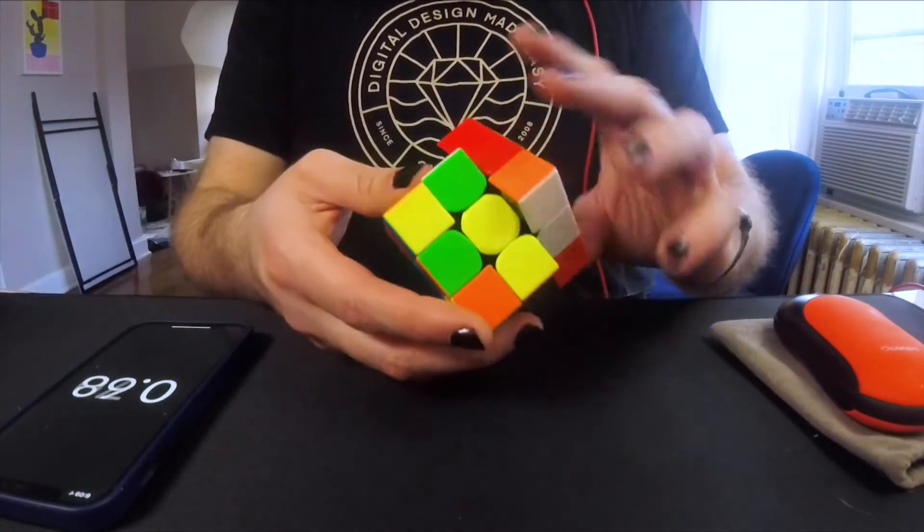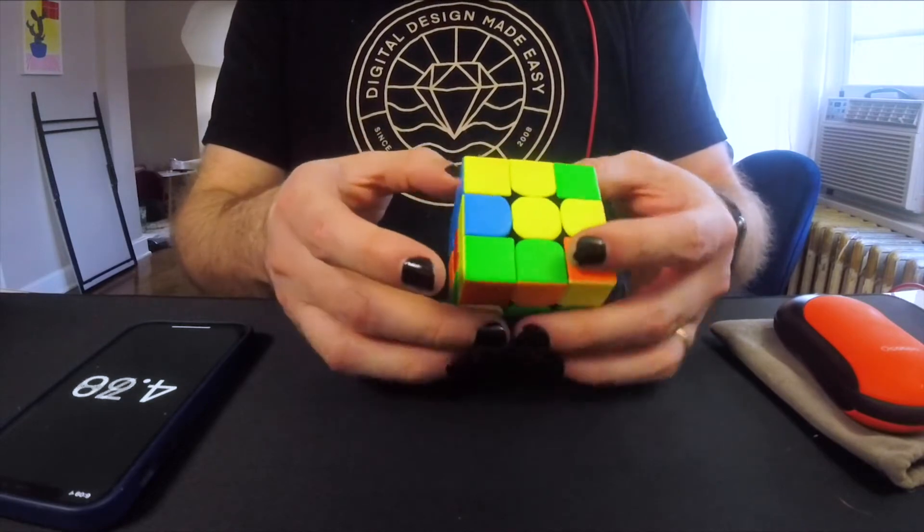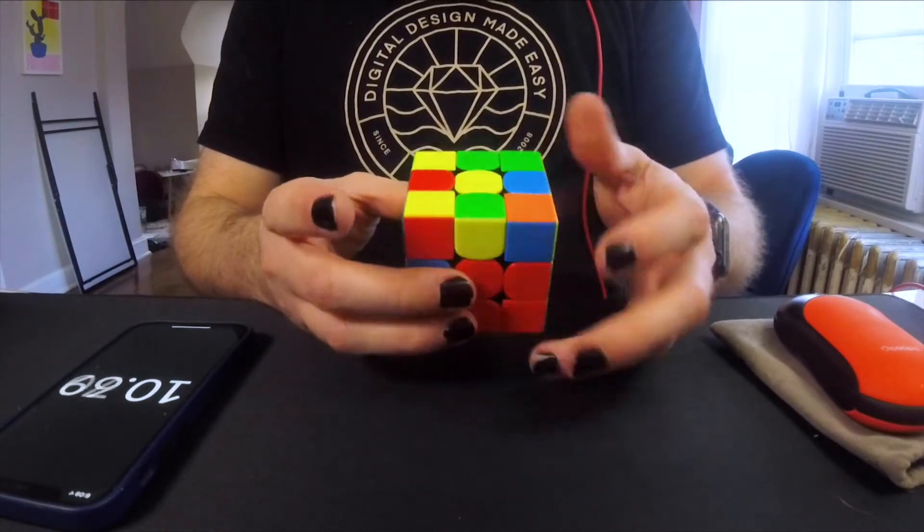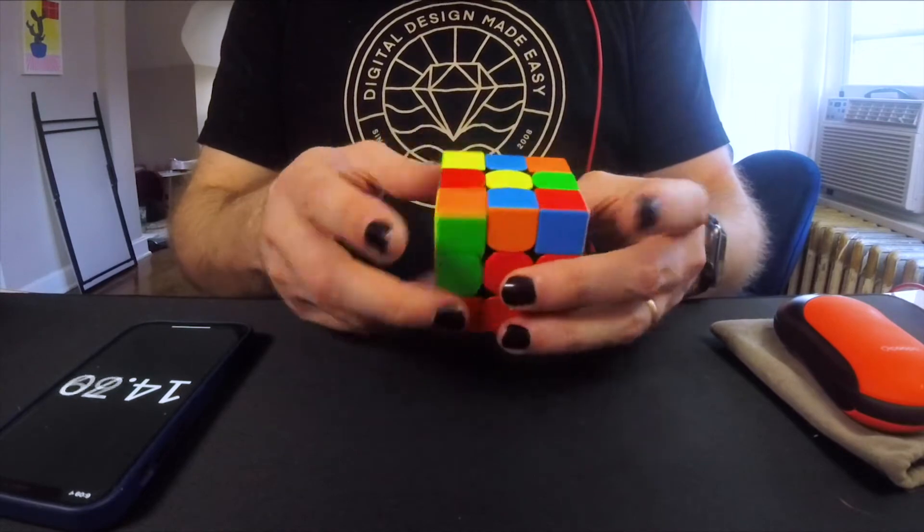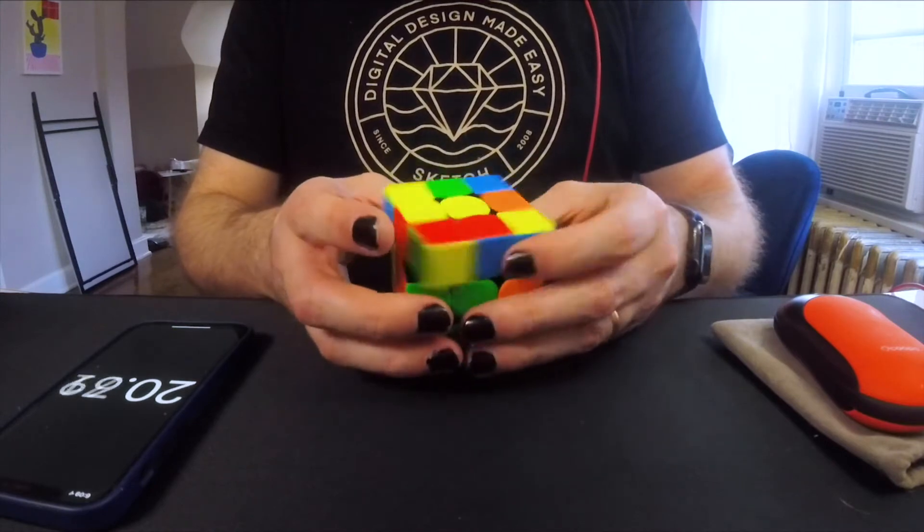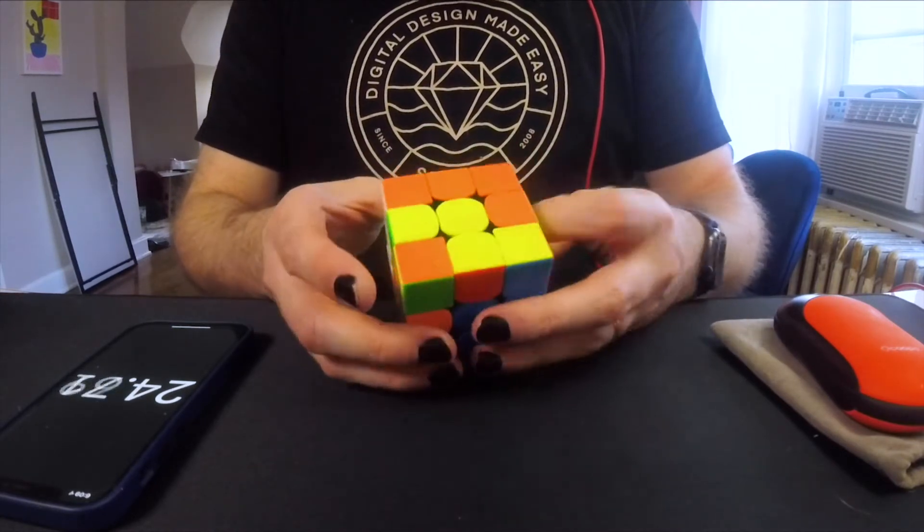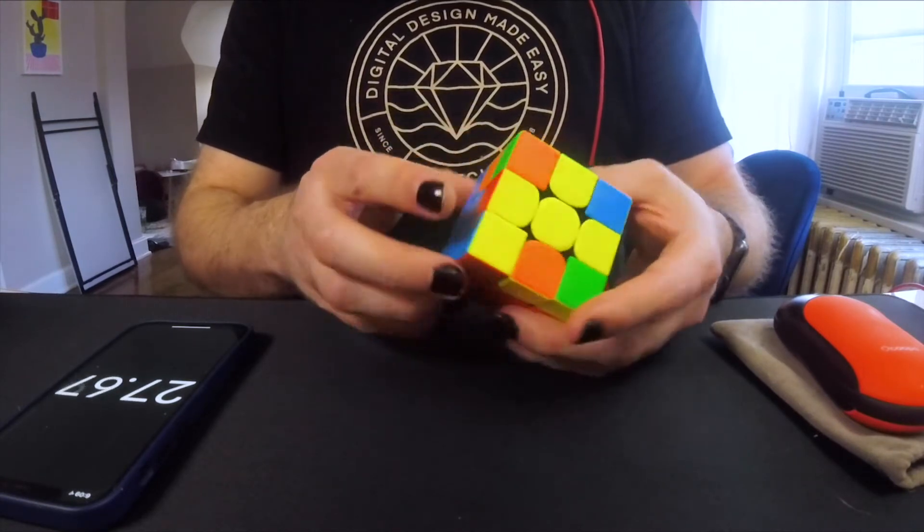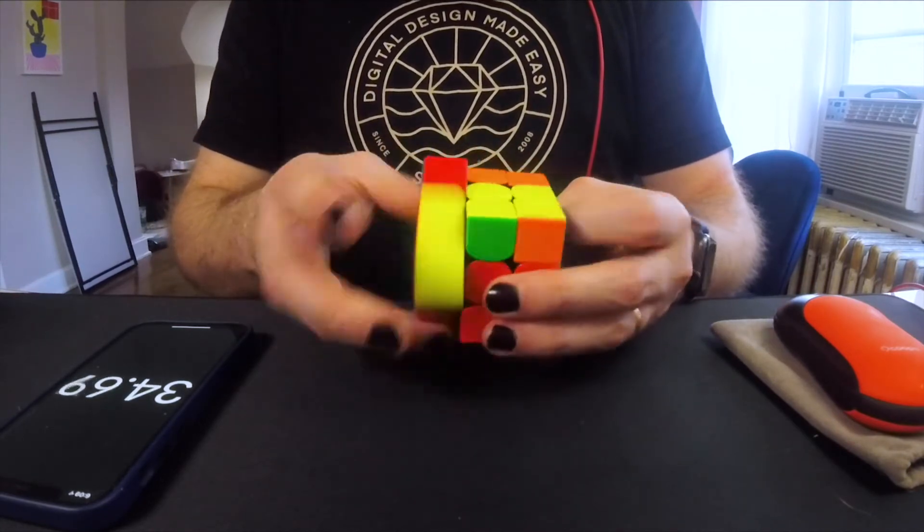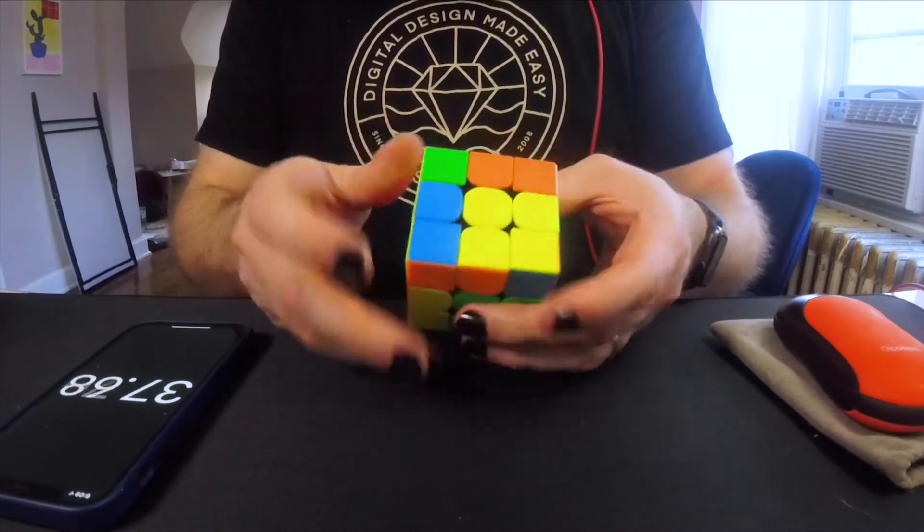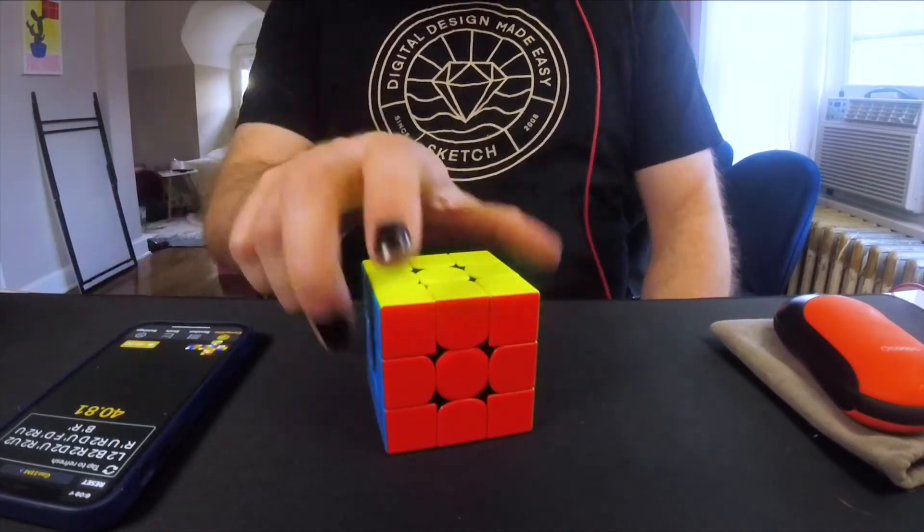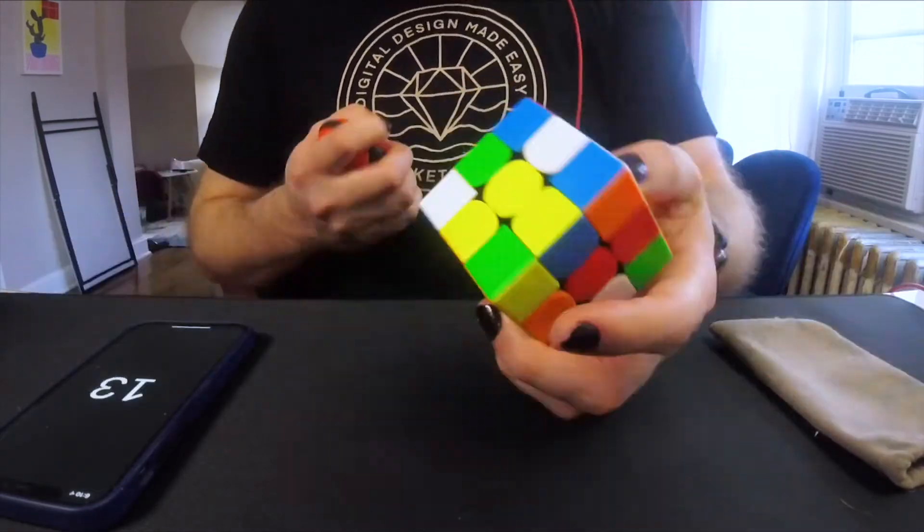So my target for this set was to get under 40 seconds which if you have just come from my first learning CFOP video you'll know I was more around a minute or over a minute. In the month and a half basically since I posted that video through drilling algorithms getting better at finger tricks and just a lot of practice I have almost halved my time. I don't expect to continue that trajectory you know I'm not going to in a month and a half be 15 seconds or maybe even sub 20 but I have picked these things up pretty quickly and I do think that focusing not just on the 3x3 has helped.